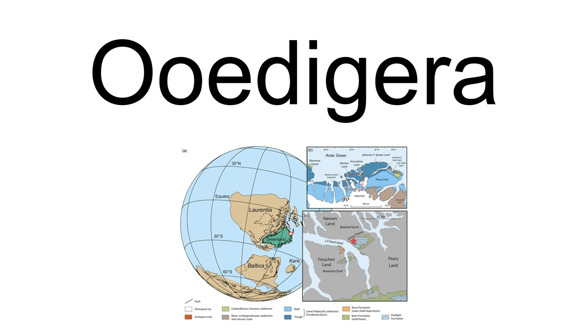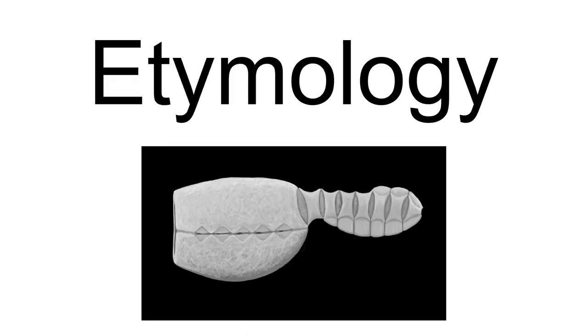The genus name Oedigera derives from ancient Greek Oedonus, egg-shaped or oval, and geros, old. The species name Pili is in honor of Professor John S. Peele from the Geological Survey of Greenland, who especially researched the locality Oedigera was discovered in.